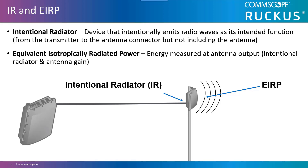Mathematically, EIRP is a combination of the transmitted signal, all loss introduced by connectors such as pigtails or metal connectors, attenuators, lightning arrestors, and amplifiers — everything between the transmitter and the lead of the antenna that connects to the cable is the intentional radiator. All of that combined with the gain of the antenna is the equivalent isotropically radiated power.